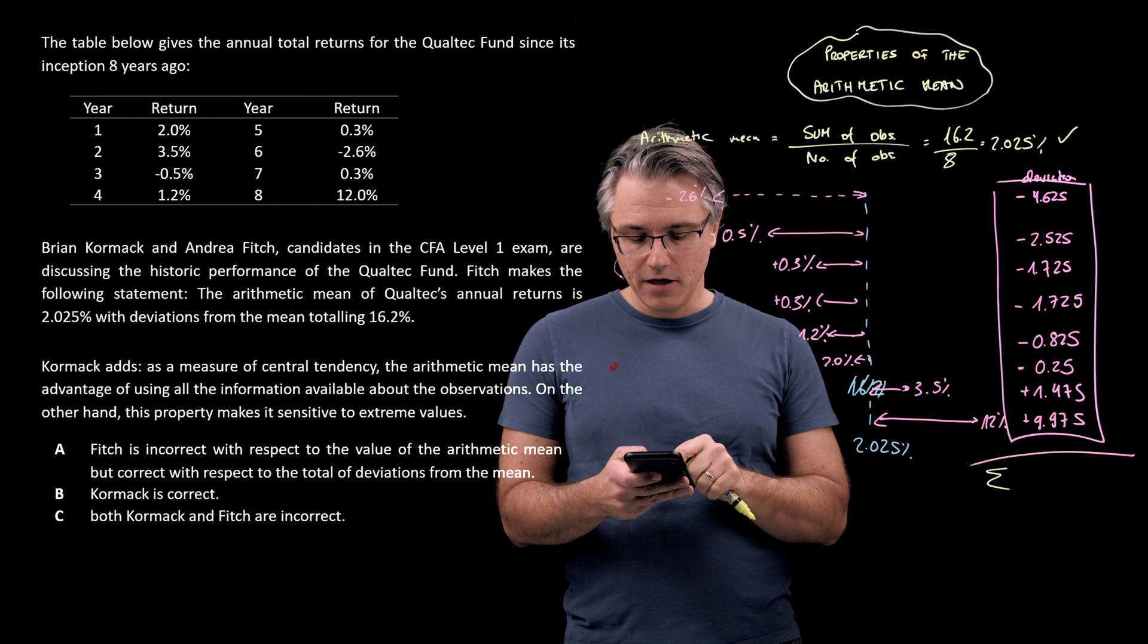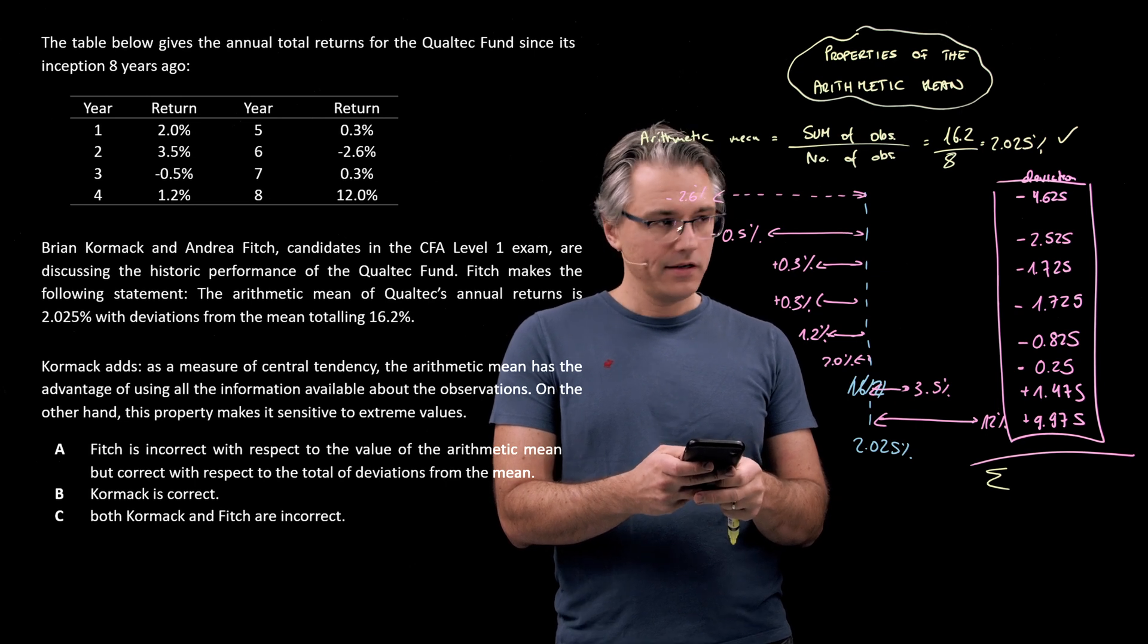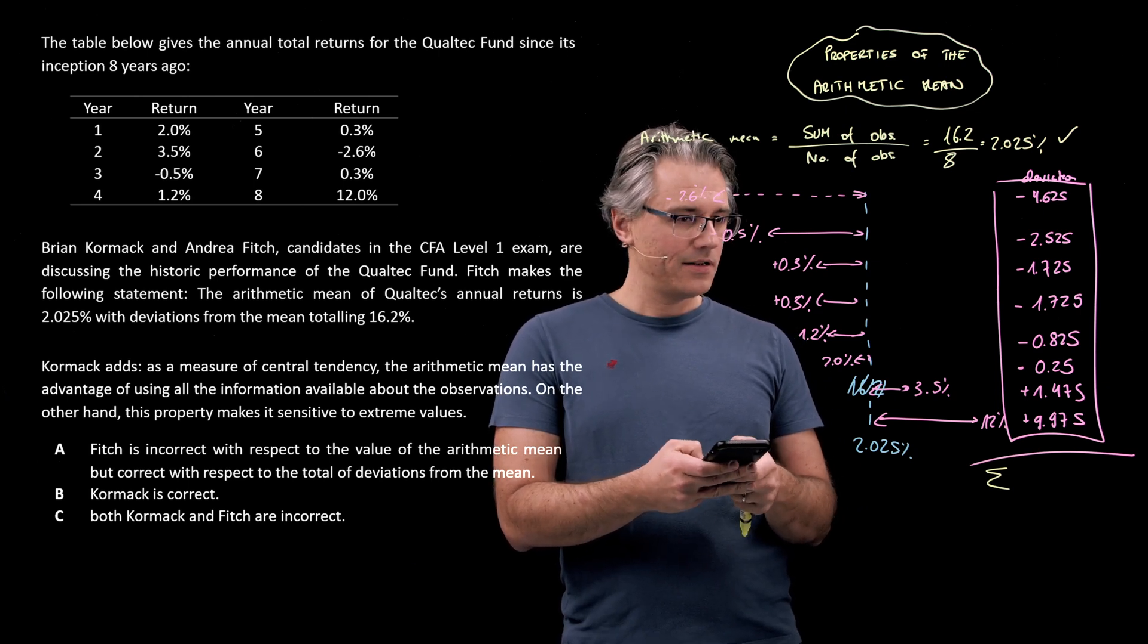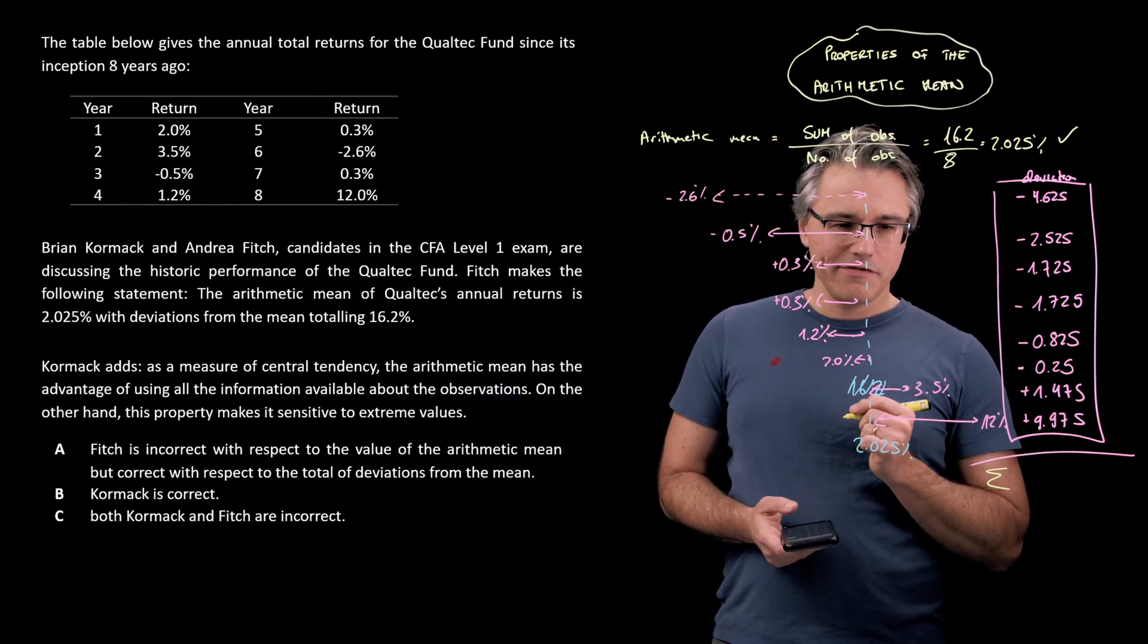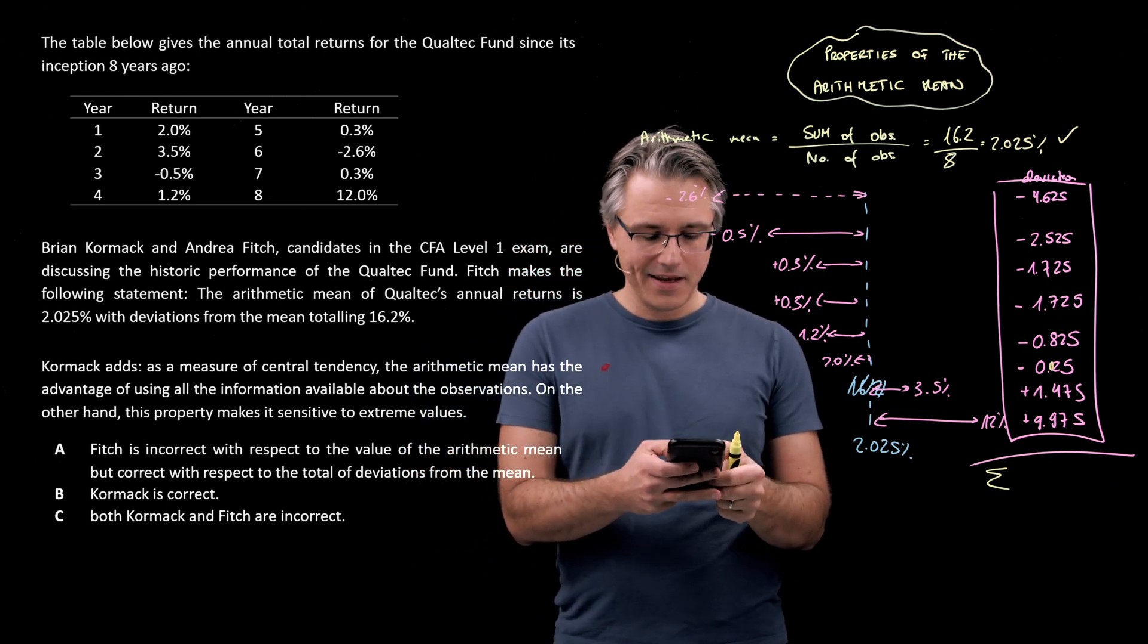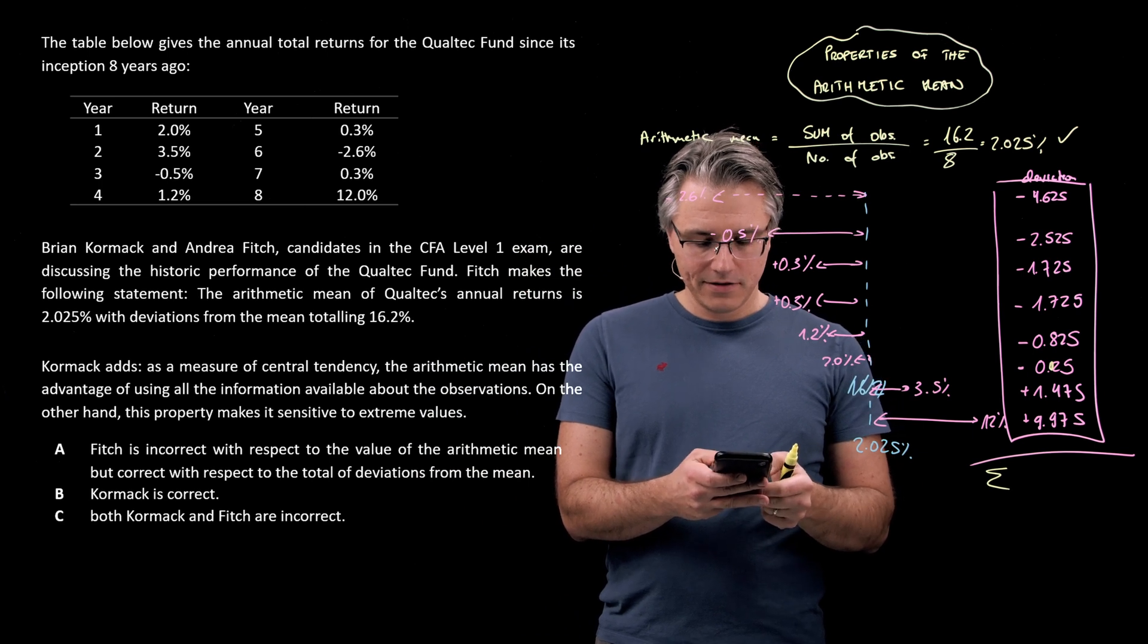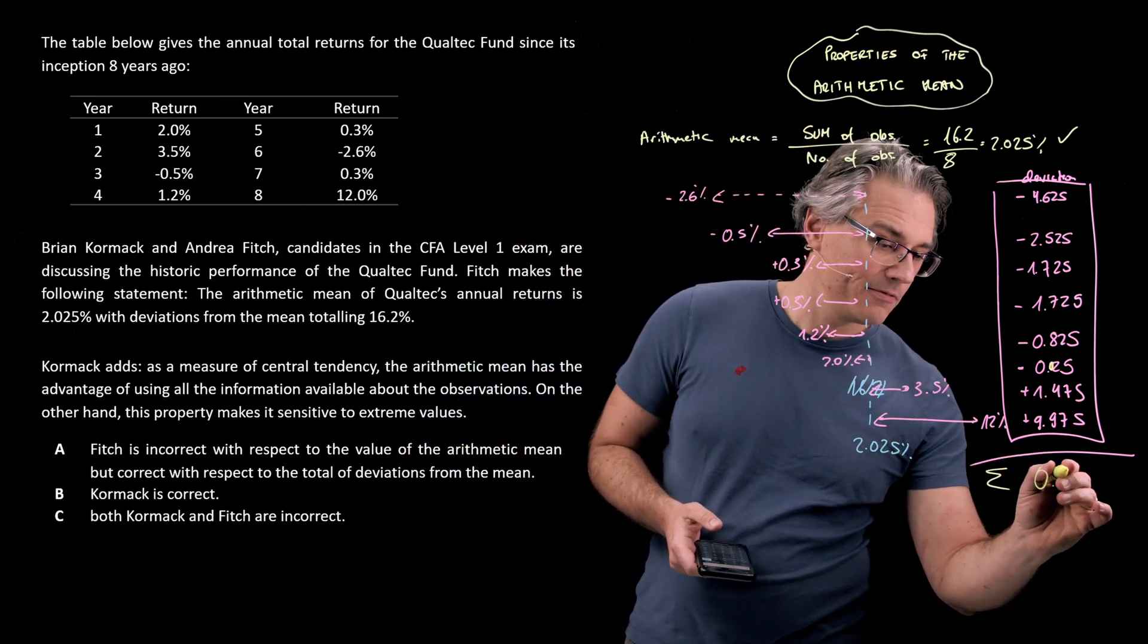Let me do this on the calculator really quickly. 4.625 negative minus 2.525 minus 1.725, and another 1.725, obviously negative. Then 0.825 negative minus, and here, I've got to be extra careful, and I wasn't. I wrote this down, I can see, without this additional zero over here, which is absolutely critical. So this is a negative, but it's 0.025, not just 0.25, and now add these to 1.475 and 9.975, and I'm looking at my calculator at a result which is 0.0.